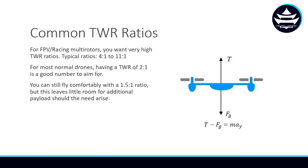Now that we have some intuition for thrust-to-weight ratios and we know how to calculate it, let's get into some common thrust-to-weight ratios seen in the drone community. For FPV racing multi-rotors, they use very high thrust-to-weight ratios. Typical ratios could be 4 to 1, up to even 11 to 1. This is a pretty ridiculous thrust-to-weight ratio, and these drones have been optimized for maximum thrust, so they can perform their crazy maneuvers. For a normal drone, having a thrust-to-weight ratio aiming for around 2 to 1 is a great number to aim for. However, you can still fly a drone with a 1.5 to 1 ratio or 1.3 to 1 ratio, but this leaves little room for additional payloads should the need arise.